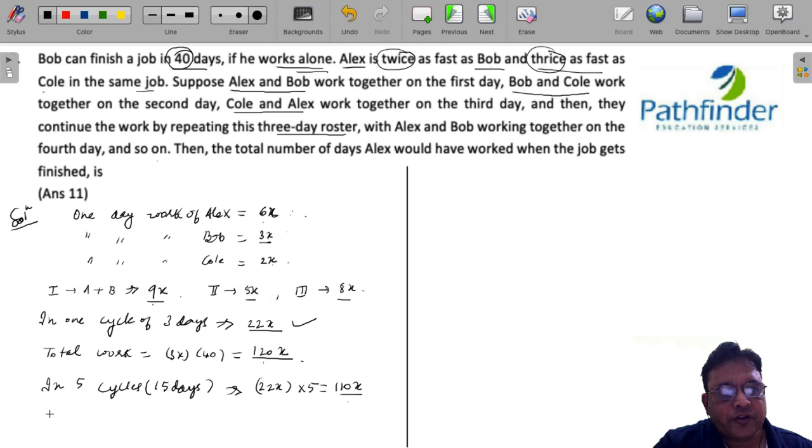In the sixth cycle, day one of sixth cycle, who is going to work? A and B. And they will do 9x of the work. And on day two of the sixth cycle, still 1x work will be balanced. And that will be done by B and C. And they will be able to finish off this work on day two of the sixth cycle.